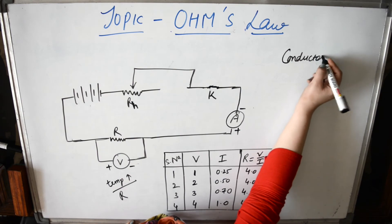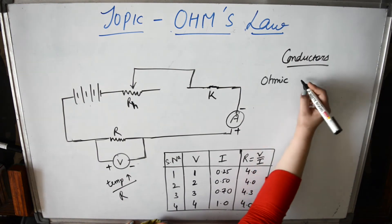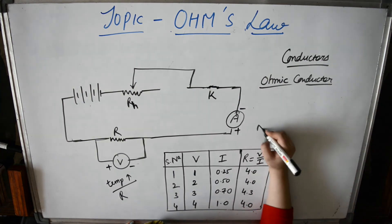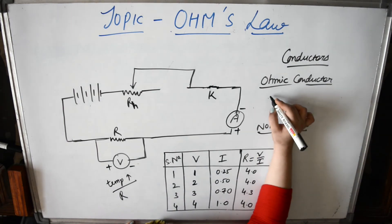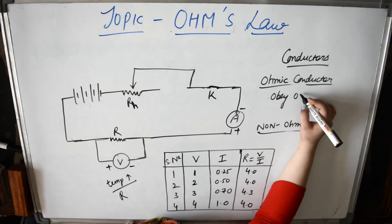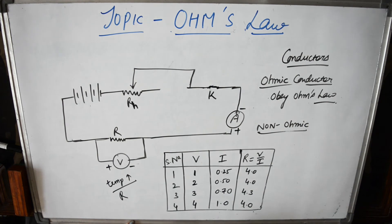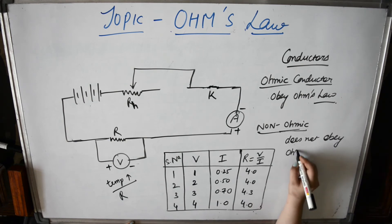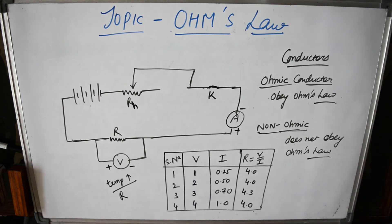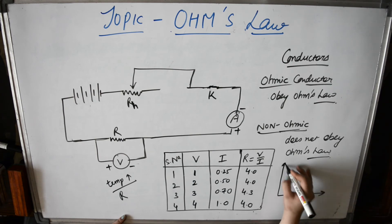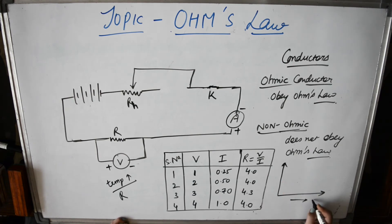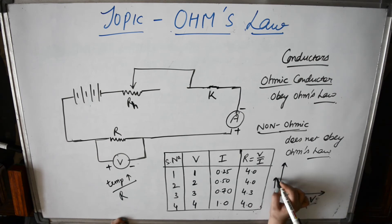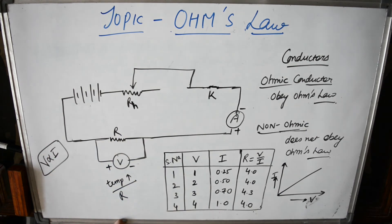Based on this, we divide conductors into two types: ohmic conductors, which obey Ohm's Law, and non-ohmic conductors, which do not obey Ohm's Law. We can show this graphically. If the V-I graph is a straight line, that means the conductor obeys Ohm's Law, because V and I are directly proportional to each other.